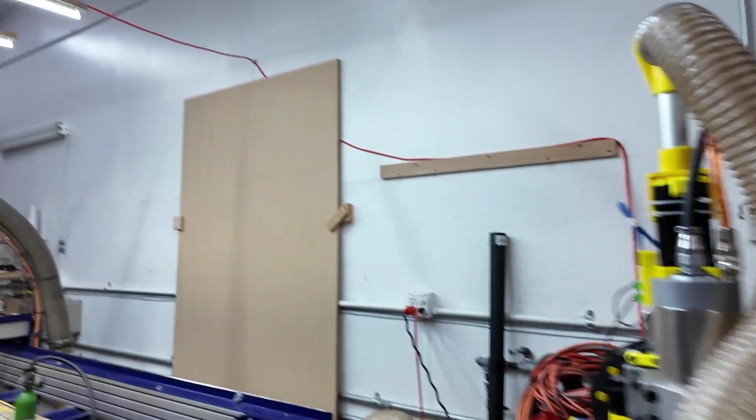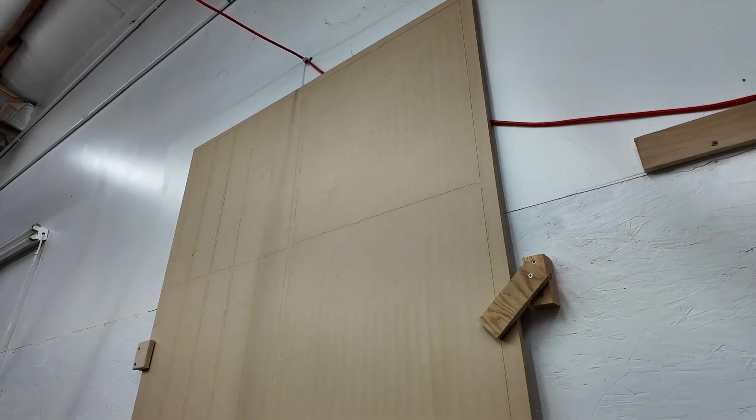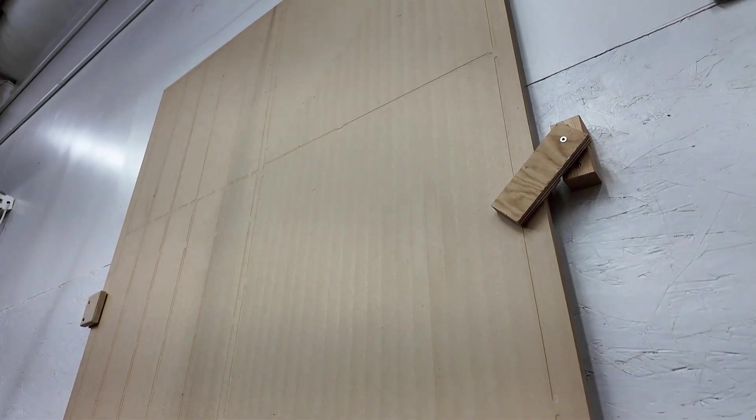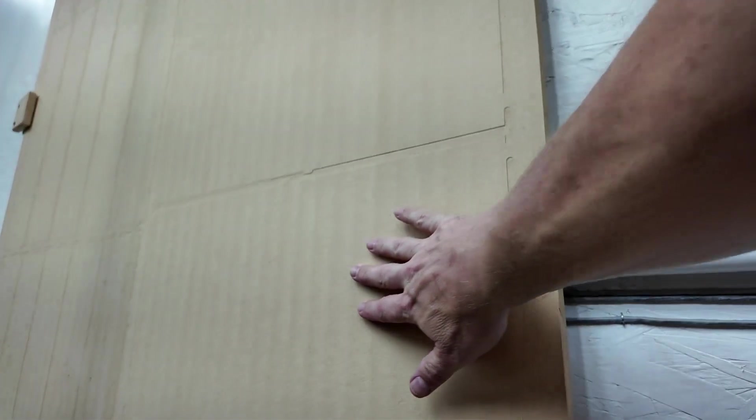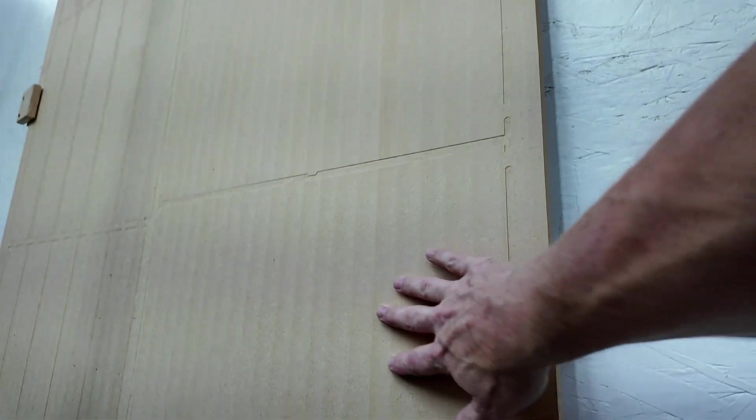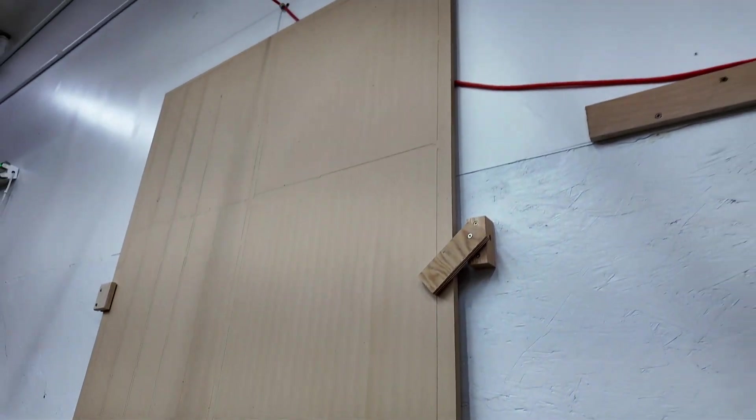You can see an example over here. This is the spoil board for my ShopBot. And you can see the lines are a lot easier to see, and you can feel in here a little bit more of the step that you can visually see. But it is still not enough to catch your finger on.